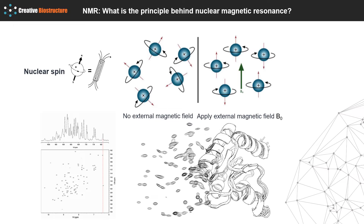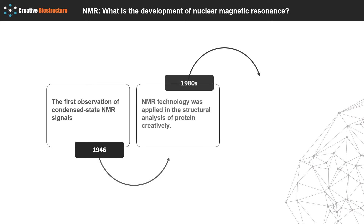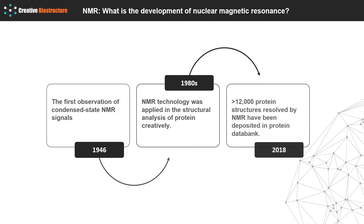Interpretation of these signals by computer-aided methods leads to deciphering of the three-dimensional structure. Since the first observation of condensed-state NMR signals in 1946, NMR technology has experienced rapid development for over 70 years, extending from physics to chemistry, medicine, material science, life science and many others. Notably, in the 1980s, NMR technology was applied to the structural analysis of proteins creatively, promoting its application in the biological field. Although the amount of three-dimensional protein structure data obtained by NMR is not comparable to that of single crystal X-ray diffraction, the unique advantages of NMR technology have been widely noticed. NMR is able to provide information on a kinetic basis, such that the internal movement of proteins over multiple time scales and their binding mechanisms to ligands can be solved.